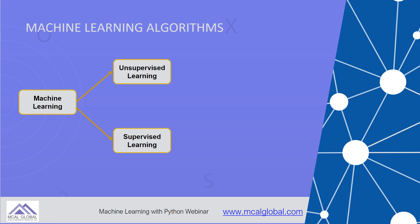The second type is unsupervised learning. It is a type of learning algorithm that is used to draw inferences from the data — we give it data without its outcome.